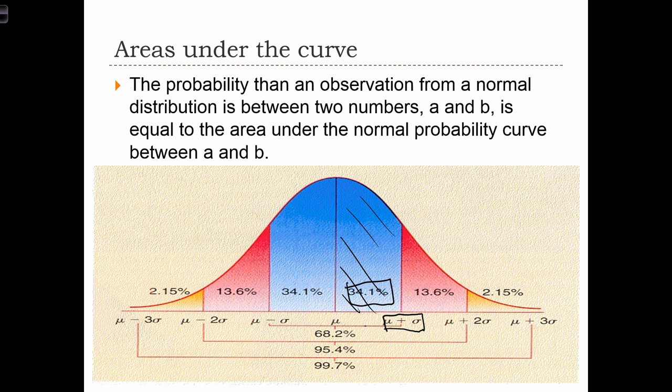Similarly, if we had a value, if we wanted to know the probability of the random variable being between mu minus two sigmas, so two standard deviations below the mean, and being just one standard deviation below the mean, mu minus sigma, well, that probability is given by this red zone here, and it's equal to 13.6%.